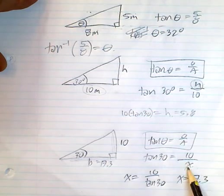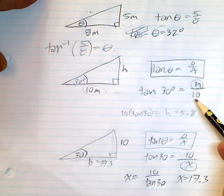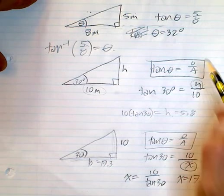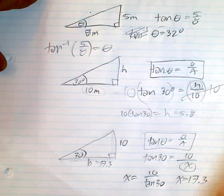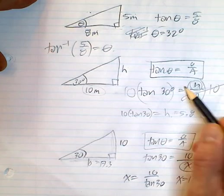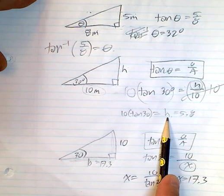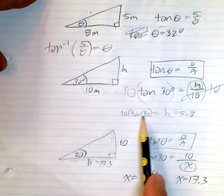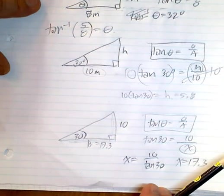In this case, you multiply both sides by 10. Then you eliminate that. You end up with h equals 10 tan 30, which is what I have here. When you do 10 times tan 30 you end up with 5.8.